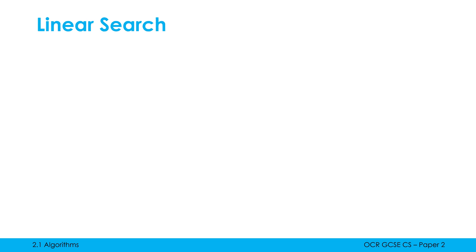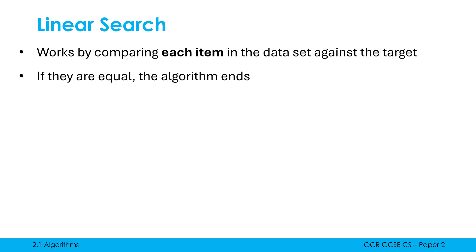So how does linear search work? Well, it works by comparing each item in your dataset against the target item. If the item is equal to the target item, the algorithm ends because it's found the target in the dataset. If the item it's checking isn't equal to the target, then simply it checks the next item. And this works sequentially. It works one by one as it progresses through our dataset.